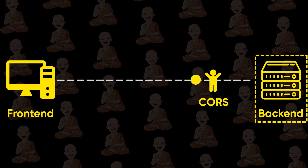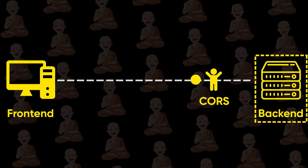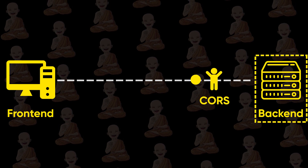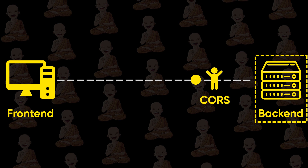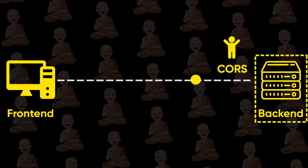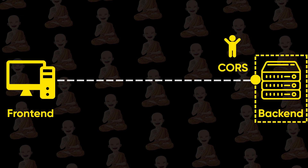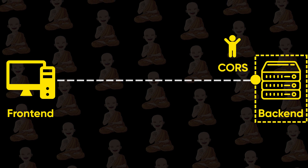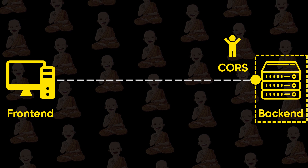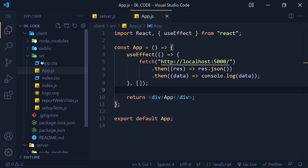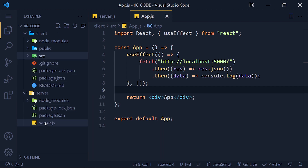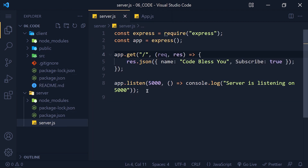So to solve this error, we need to tell CORS that if the request comes from this origin, then allow this request to post or get data in the server. So now let's solve this error. Here I am using React as a frontend and Node.js as the backend — you might have the same or different.